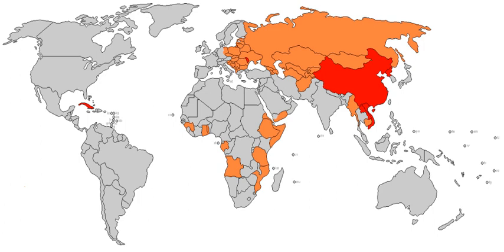Capitalism generally features the private ownership of the means of production and a market economy for coordination. Corporate capitalism refers to a capitalist marketplace characterized by the dominance of hierarchical, bureaucratic corporations. Mercantilism was the dominant model in Western Europe from the 16th to 18th century, encouraging imperialism and colonialism. Modern capitalism has favoured free trade to take advantage of increased efficiency due to national comparative advantage and economies of scale. Some critics have applied the term neo-colonialism to the power imbalance between multinational corporations operating in a free market versus seemingly impoverished people in developing countries.